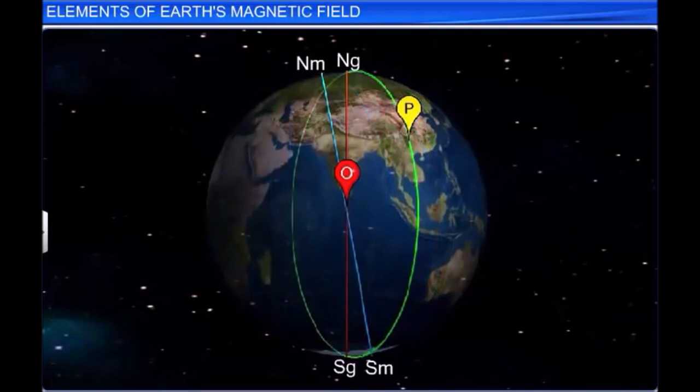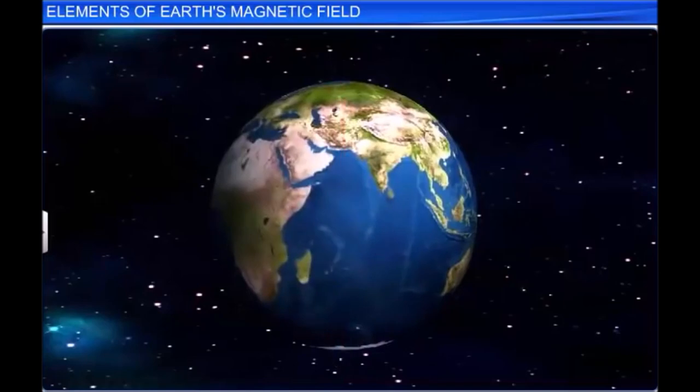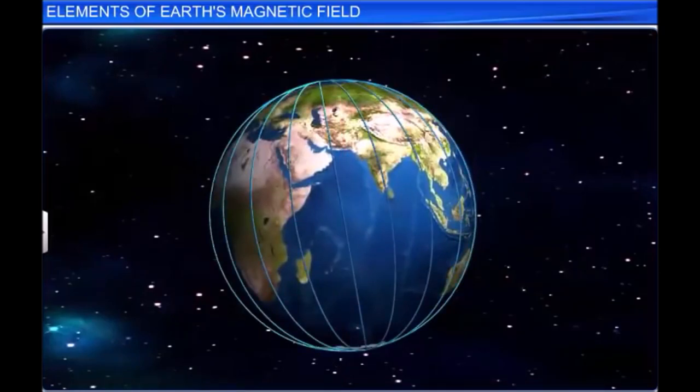The magnetic axis intersects the geographic North Pole at a point called the North Geomagnetic Pole or Northern Magnetic Pole. It intersects the geographic South Pole at a point called the South Geomagnetic Pole or Southern Magnetic Pole.